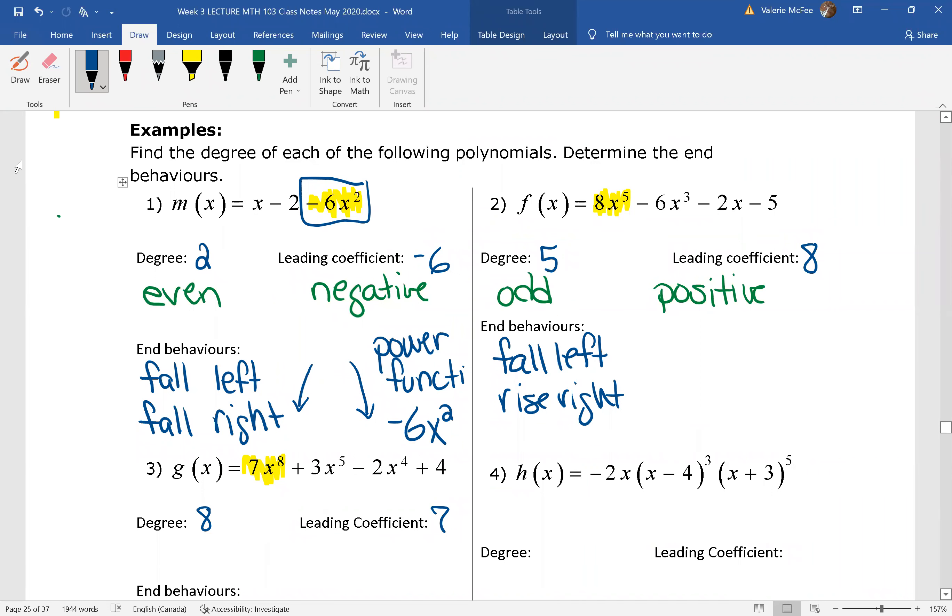So thinking about y = x³, we know that the ends will fall on the left and rise on the right. And in fact, it behaves like the graph of y = 8x⁵.